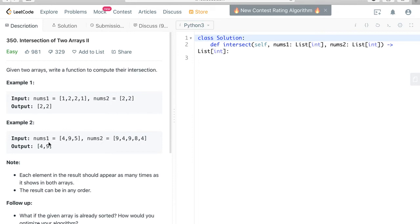Example 2: nums1 [4, 9, 5], nums2 [9, 4, 9, 8, 4]. The output should be [4, 9].